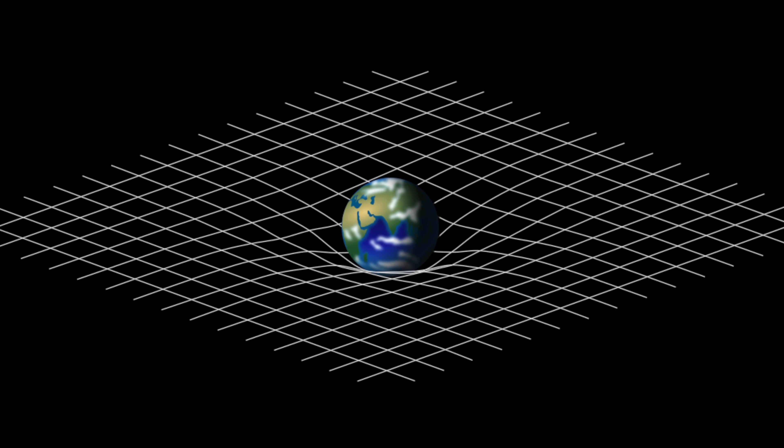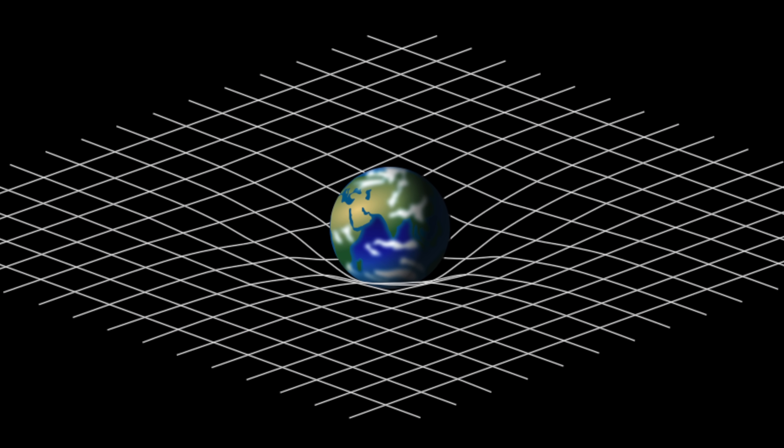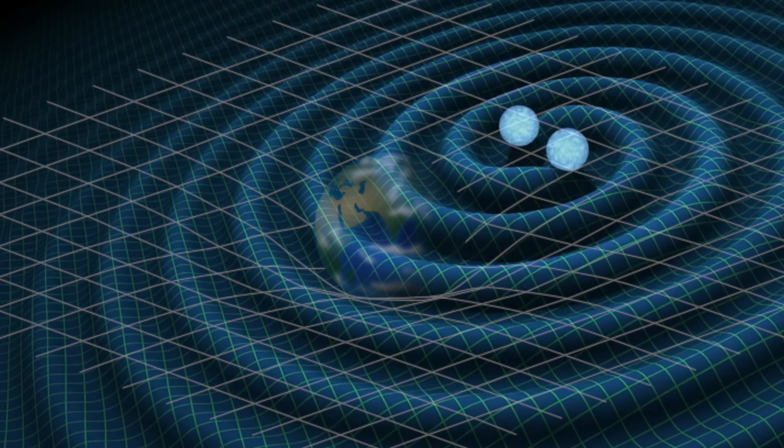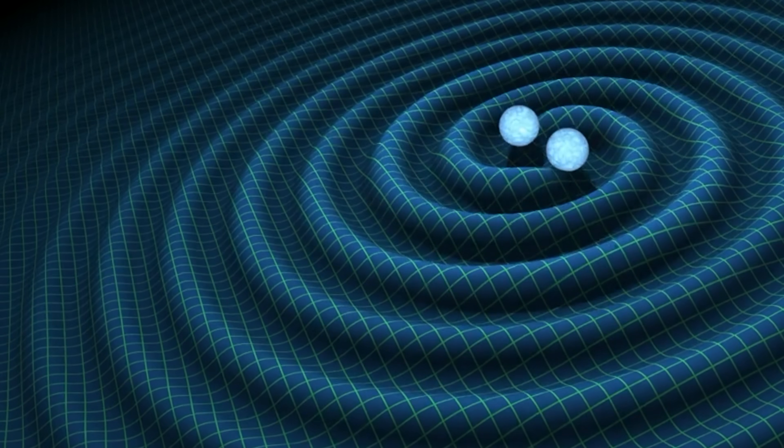Ultimately, Einstein's theory of general relativity is a sophisticated theory of gravity, which has taught us that what we experience as gravity is really the bending of space and time.